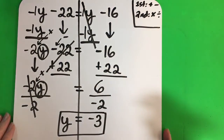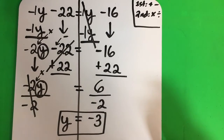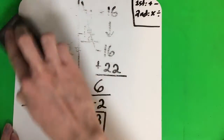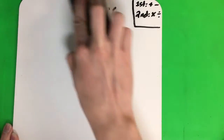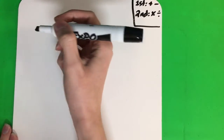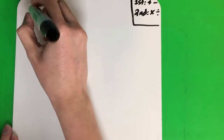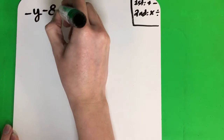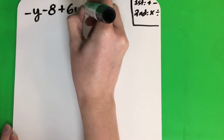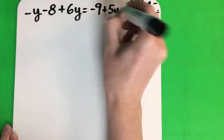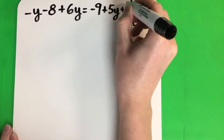If you want, take this time to pause and do a check. Let's do another one. These are going to get a little more difficult. Negative y minus 8 plus 6y equals negative 9 plus 5y plus 1.